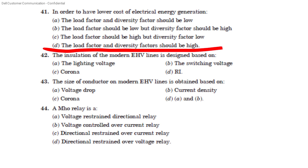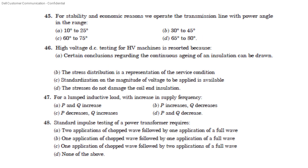The insulation of the modern extra high voltage line is designed based on the switching voltage. The size of conductor on a modern extra high voltage line is obtained based on economic resistance. We operate the transmission line with a power angle in the range for stability and economic reasons. The transmission line operates in the power angle range — Option B is 30 to 45 degrees.